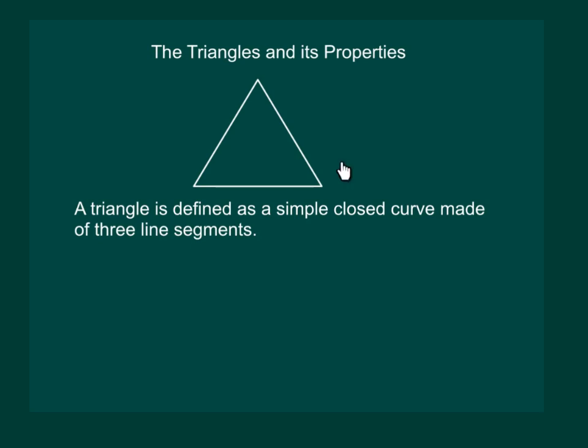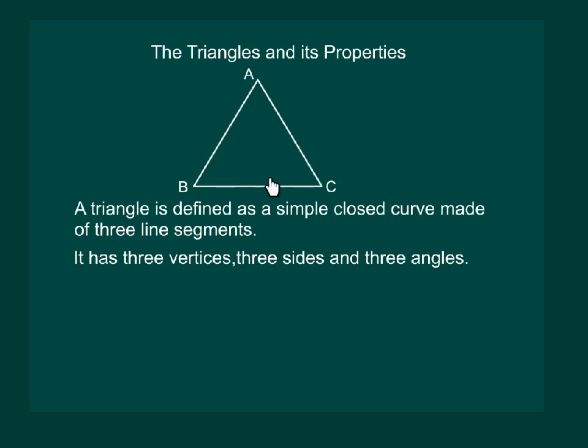A triangle is defined as the closed curve made of three line segments. It has three vertices, namely A, B and C. Three sides, namely AB, BC and CA.